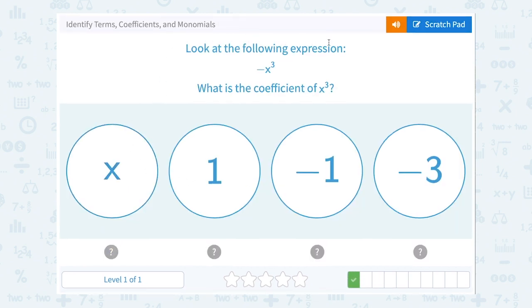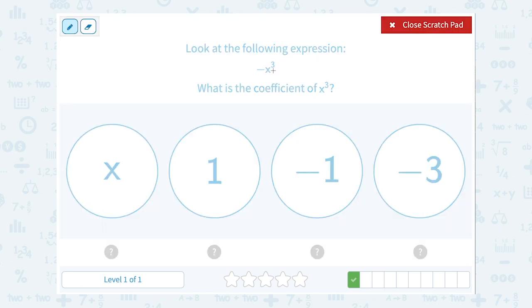Look at the following expression, negative x to the third. What is the coefficient of x to the third? Well, the negative sign, remember negative x to the third, means the exact same thing as negative 1x to the third. So we can fill in our invisible 1, and then the coefficient, or the number in front, is negative 1. Remember the sign is part of it. So coefficient, negative 1.